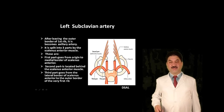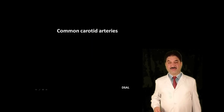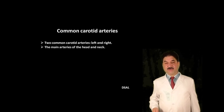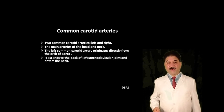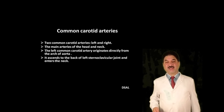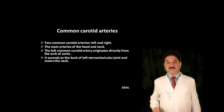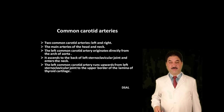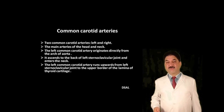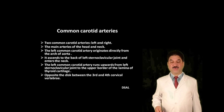Common carotid arteries: there are two — left and right — and they are the main arteries of the head and neck. The left common carotid artery originates directly from the arch of aorta, ascends behind the left sternoclavicular joint, and enters the neck. It runs upwards from the left sternoclavicular joint to the upper border of the lamina of the thyroid cartilage, opposite the disc between the third and fourth cervical vertebrae, where it divides into internal and external carotid arteries.